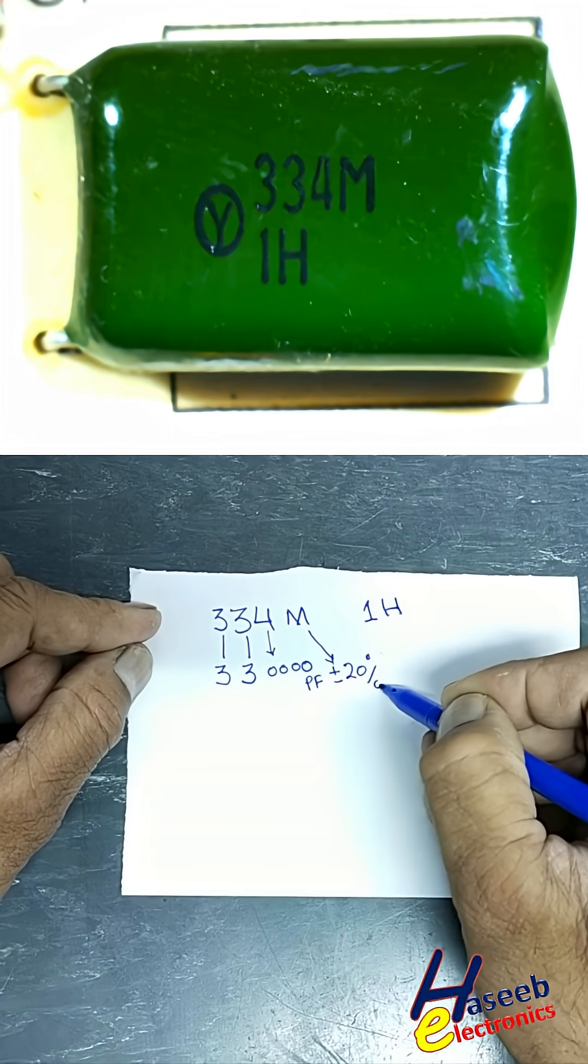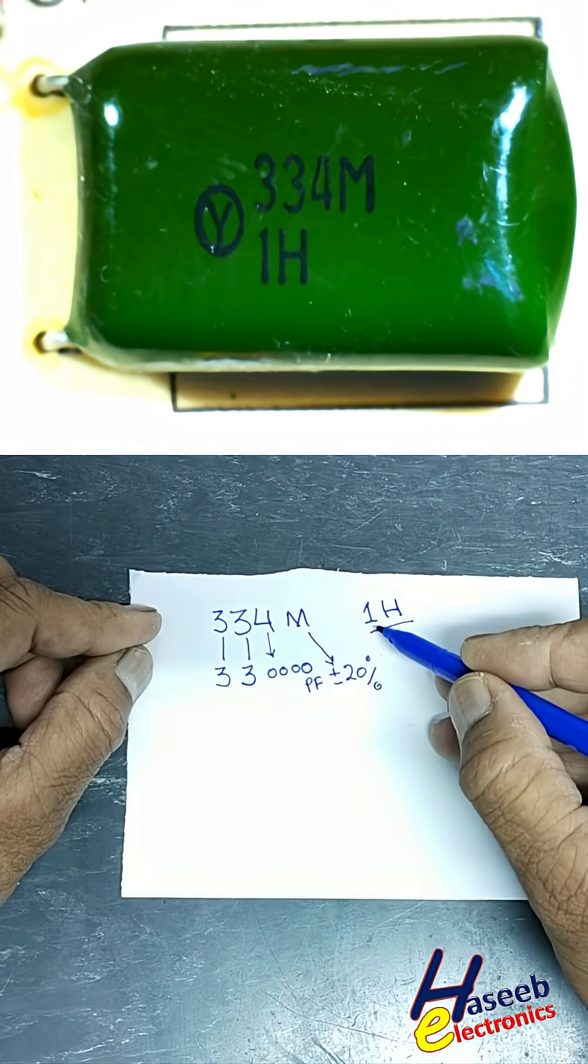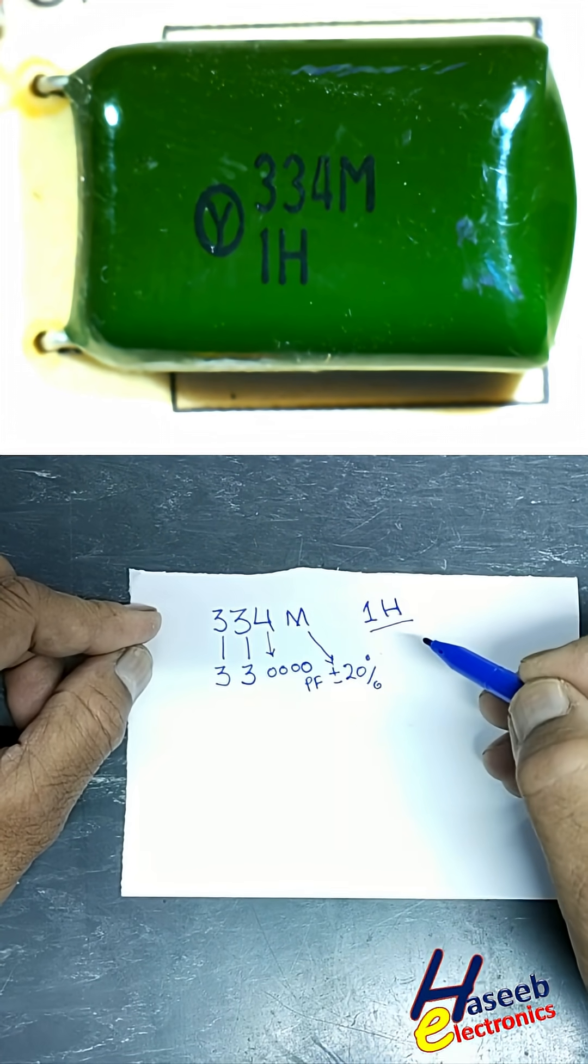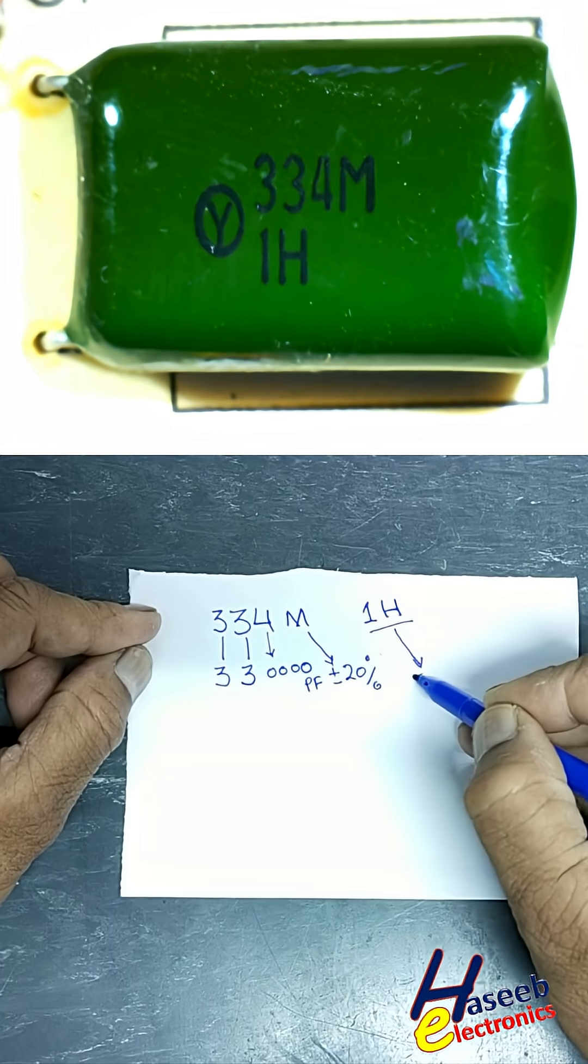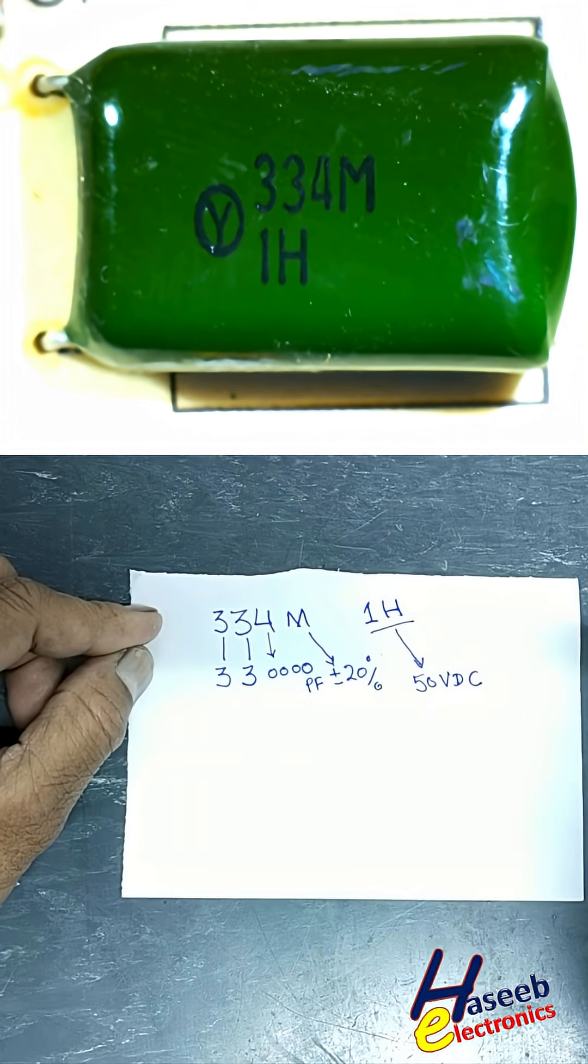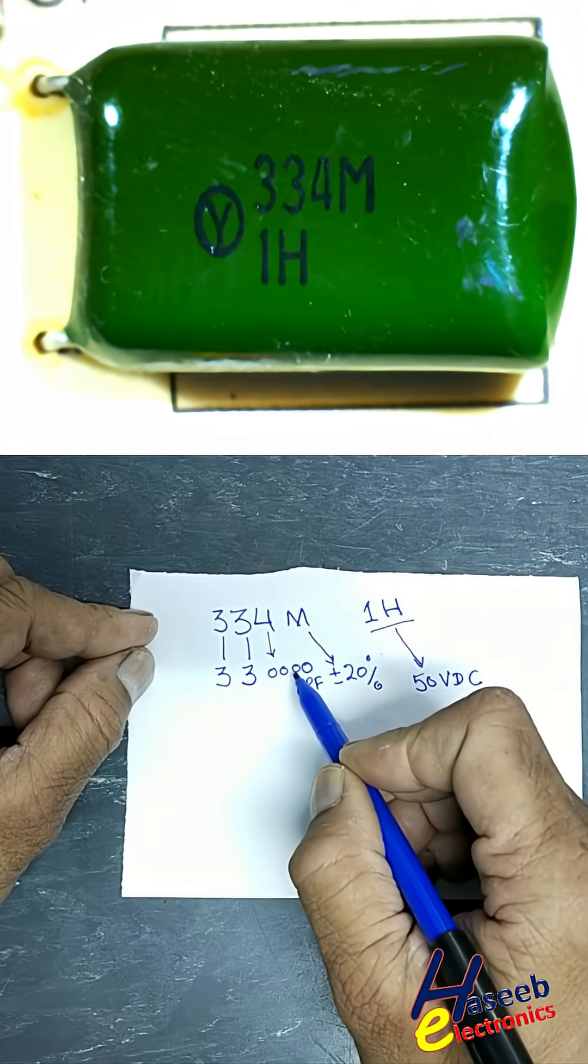The 1H marking is a DC voltage code consisting of 1 digit and 1 letter, indicating 50V DC or peak voltage.